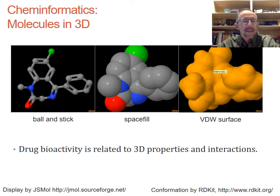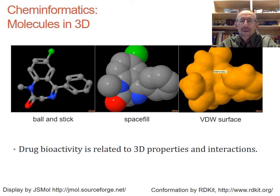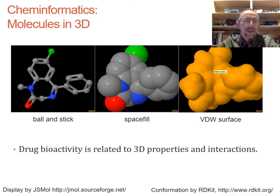A very important aspect of cheminformatics is 3D representation and analysis of molecules. Here we're looking at visualizations of the same molecule three different ways: to the left, a ball-and-stick model; in the middle, a space-fill model where spheres represent the radii of the atoms; and to the right, the van der Waals surface, representing a functional surface of that same molecule. These are interactive models — in the JSMOL application, you'd be able to rotate and examine them. Here we're just looking at static images.